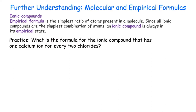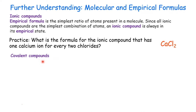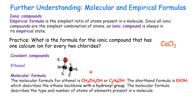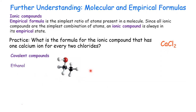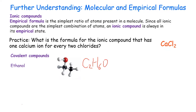Let's work on one more problem: what is the formula for the ionic compound that has one calcium ion for every two chlorides? For covalent compounds, of course, we're talking about non-metal to non-metal. Let's take ethanol as the example — two carbons, six hydrogens, and one oxygen. The molecular formula is C2H6O. As you can see, that's actually also the empirical formula, because it's already in the smallest whole number ratio.